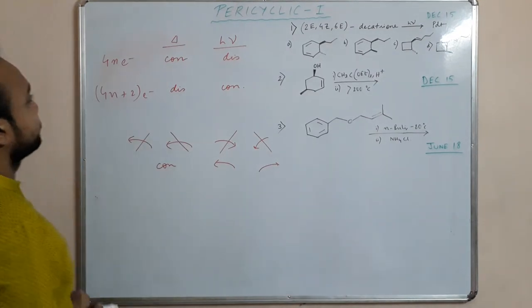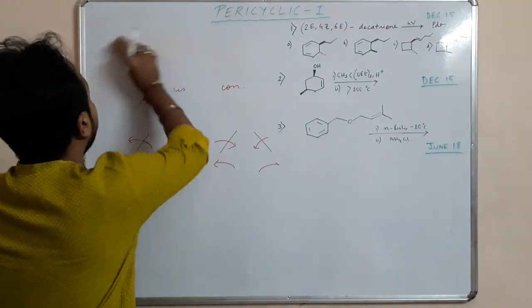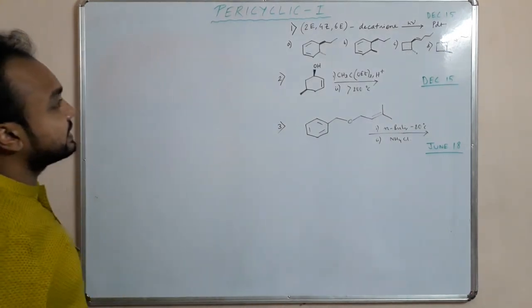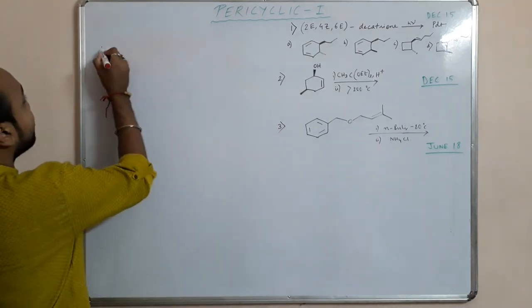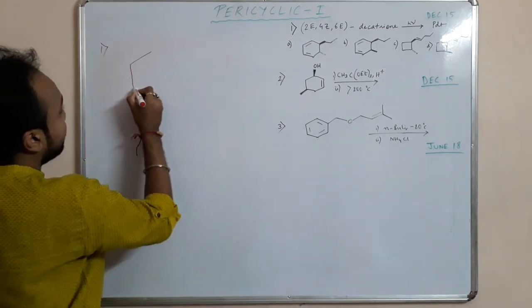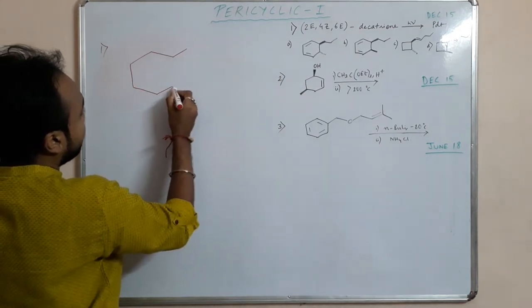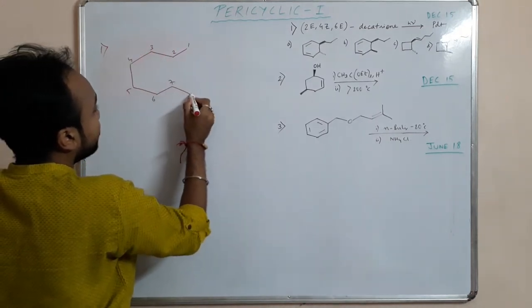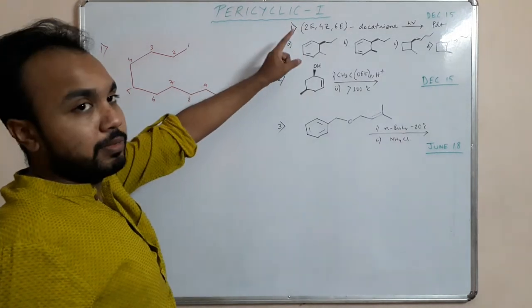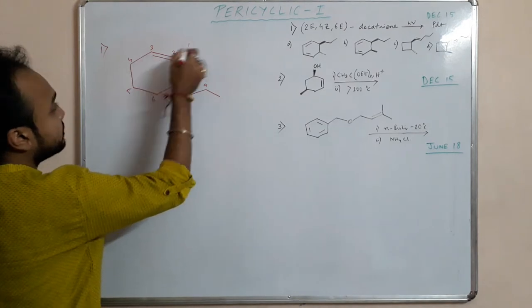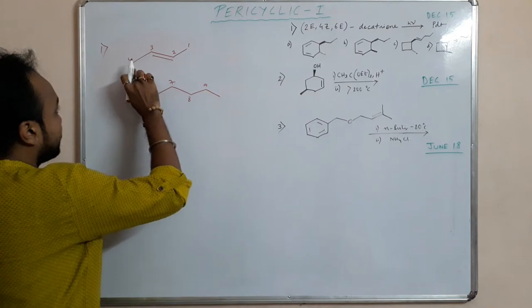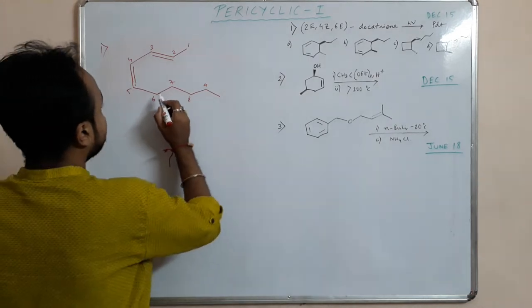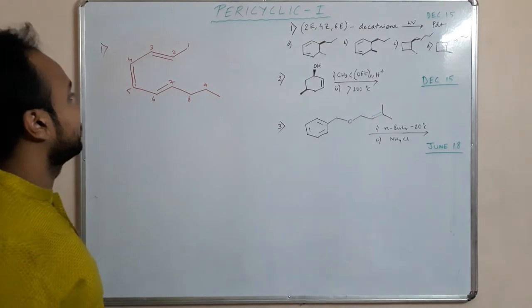Let's start with the problems. The first one is asked for 2E,4Z,6E-decatriene. We will have 1,2,3,4,5,6,7,8,9,10. 2E - E means trans, so 2E is trans, 4Z cis, and 6E, E means again trans, 6E means trans.